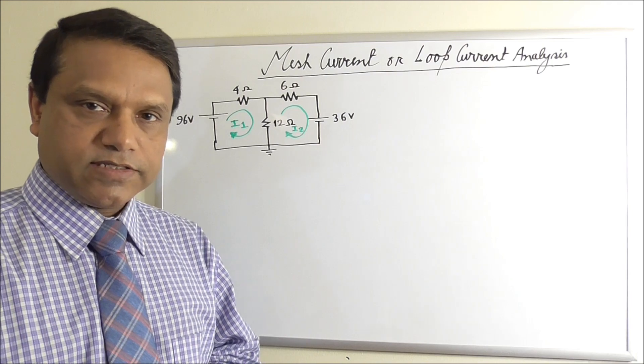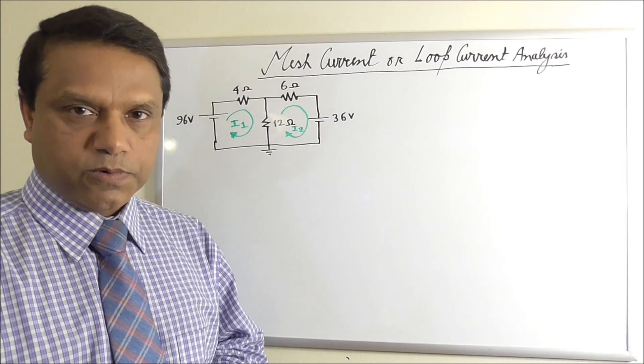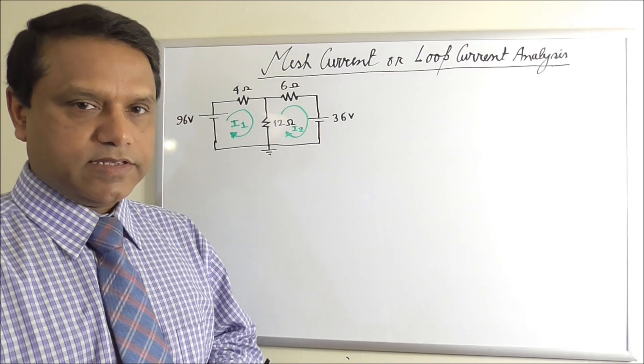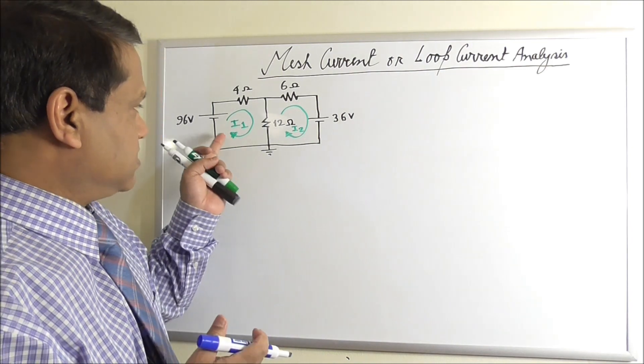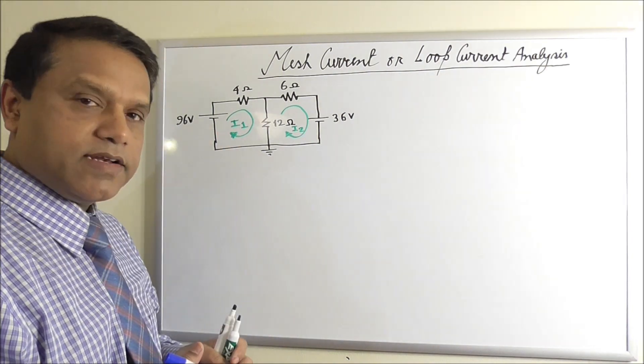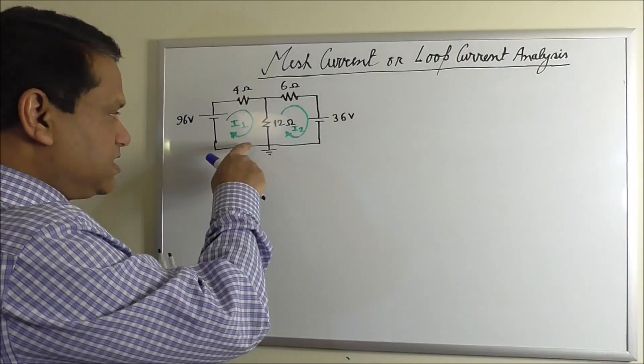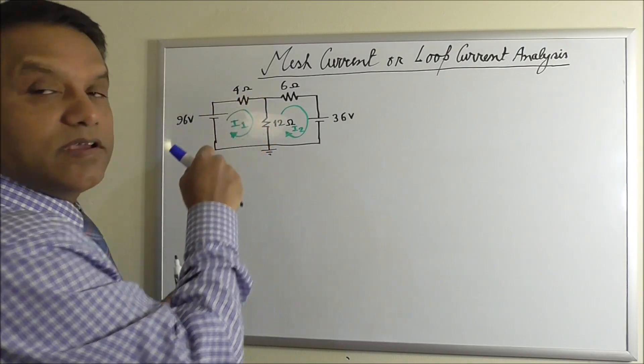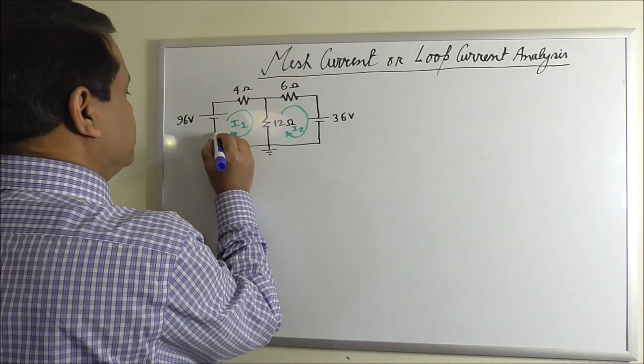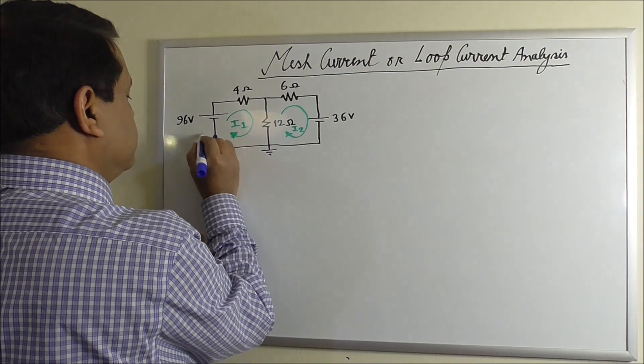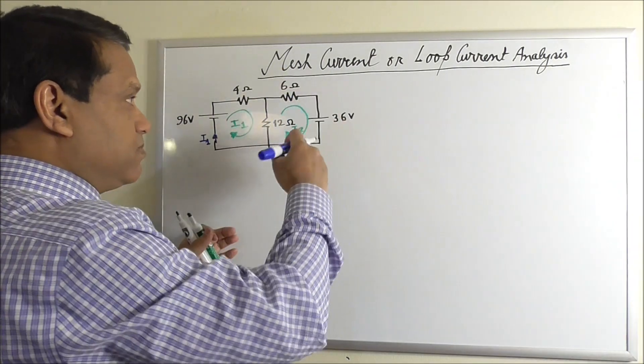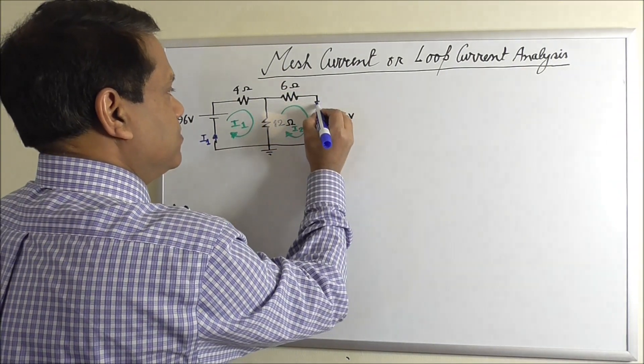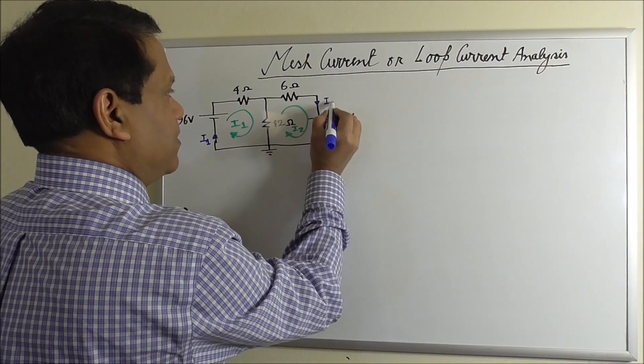Now the question arises, what are the branch currents now? The way it is assumed that if this is the loop current or mesh current I1, branch current in this branch will be I1. And here also I2.